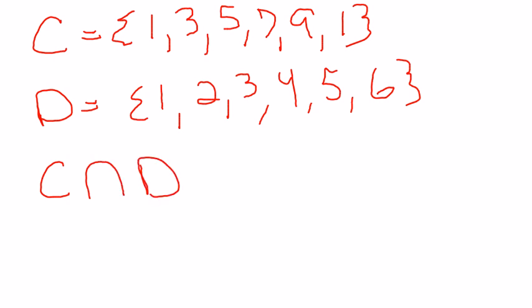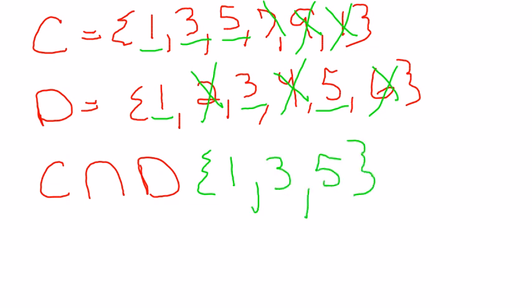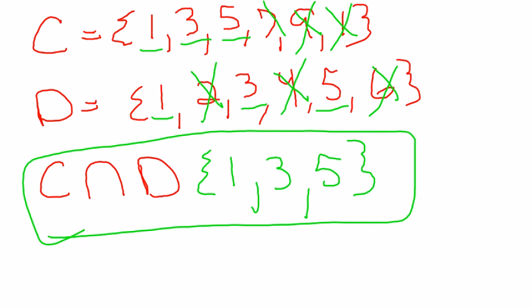Again I'm only looking for what's in common. They both have a 1. They both have a 3. They both have 5. 2 does not exist in C. 7 does not exist in D. 9 does not exist in both. I already have the 1. 4 does not exist in both. 5 does. 6 does not. So the only elements in my intersection here would be 1, 3, and 5.